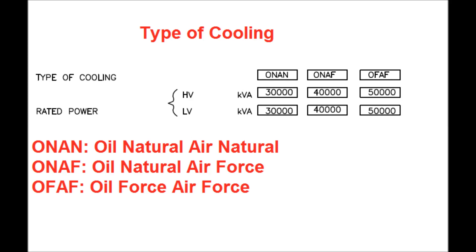After that, the type of cooling is mentioned in the nameplate. There are 3 types of cooling: ONAN, that is oil natural air natural, and the MVA rating up to which ONAN cooling can be done is mentioned. Up to 30 MVA capacity, oil natural air natural cooling can be done. Beyond this loading capacity, oil natural air forced cooling must be implemented — that is, fans must be used for cooling beyond 60% of the transformer loading.